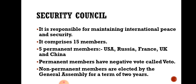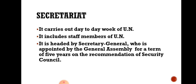The Security Council has 15 members. Out of these 15 members, five are permanent members. Then there are ten non-permanent members who are elected by the General Assembly. Each non-permanent member country has to complete a term of two years. India has already served as a non-permanent member of the Security Council seven times, and at present India is serving for the eighth time.